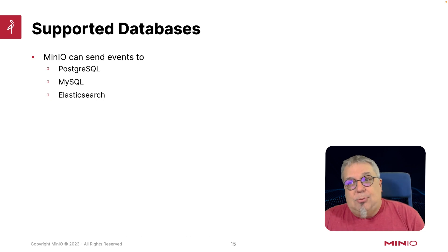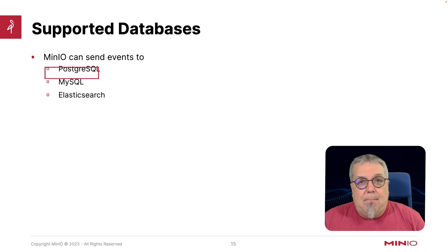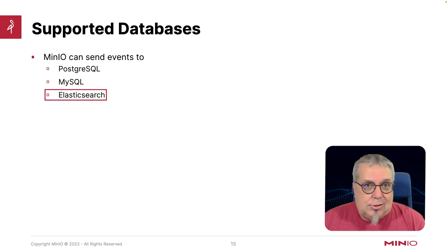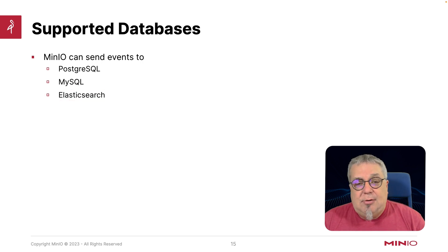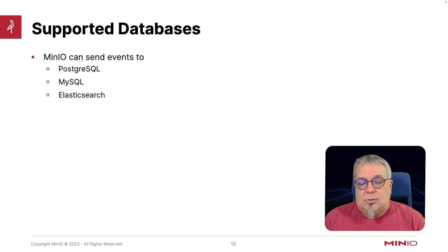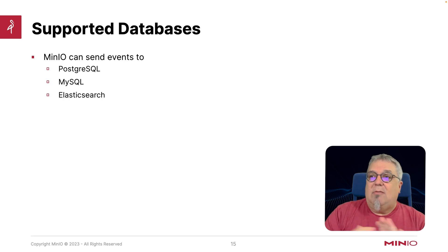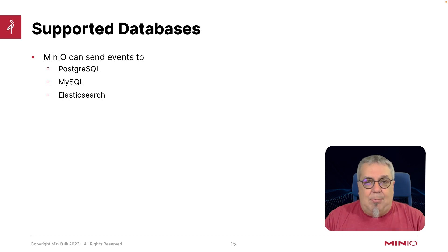Min.io supports three different databases out of the box. You can send your events to Postgres, MySQL, or Elasticsearch. Elasticsearch is a great option if you want to do further reporting, because the platform has lots of reporting abilities built into it with its Kibana tools. Postgres, MySQL, Elasticsearch — these are great places to send stuff if you want to keep an audit log and audit trail of every event that's happened in your system.